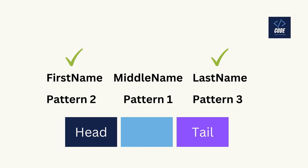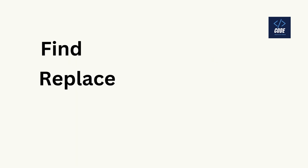Now let's take the first example where we know the first name and last name and want to find all the middle names. We are going to discuss two points: first, finding the data, and then replacing it with spaces.